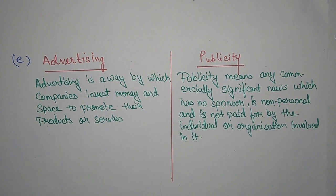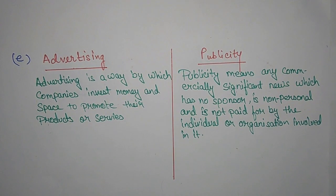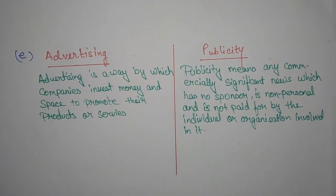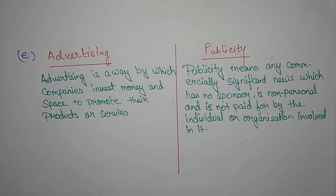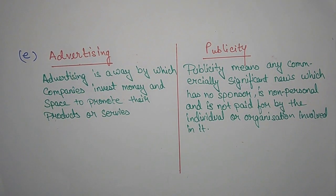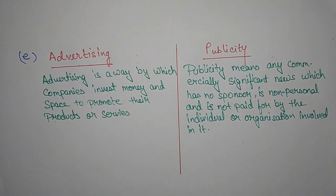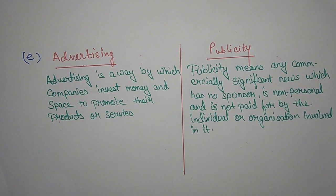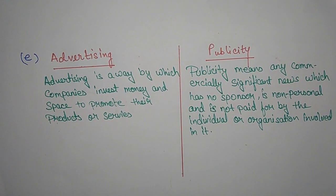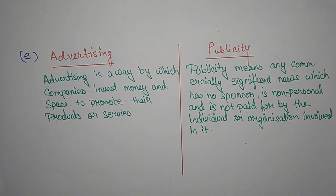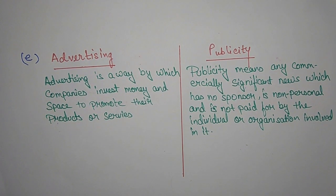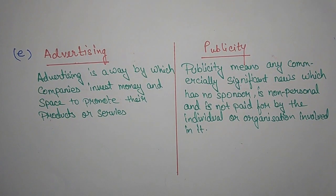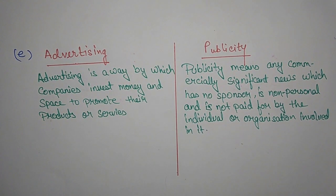Part E — Advertising and publicity. Advertising is a way by which companies invest money or space to promote their products or services — for example, advertisements you see on TV or YouTube channels. Publicity means any commercially significant news which has no sponsor, is non-personal, and is not paid for by the individual or organization involved.